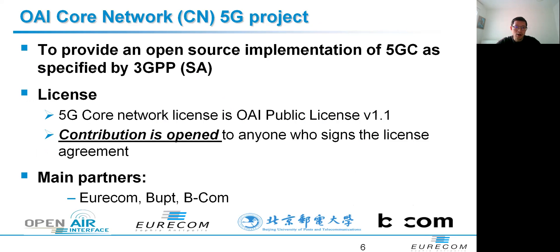Next, let's talk about our Core Network 5G project. The objective of our project is to provide an open-source implementation of 5G Core in standalone mode as specified by 3GPP. It is under OAI Public License version 1.1 and open for anyone who signs the license agreement to contribute. The main contributions until now come from Aerocom, BPT, and BCom, among others.